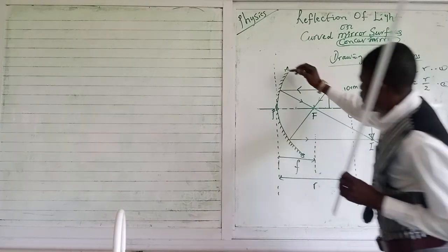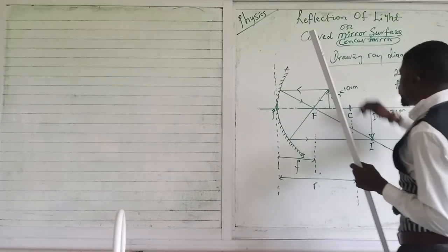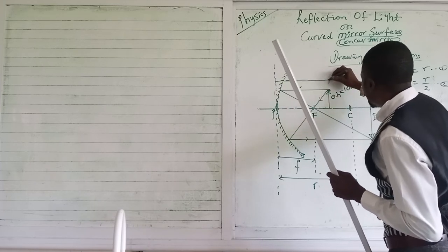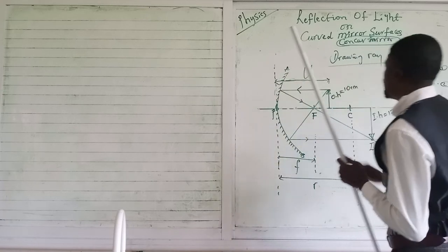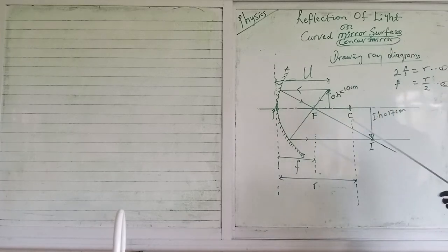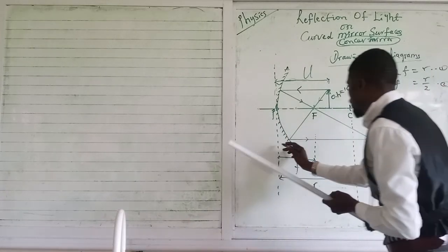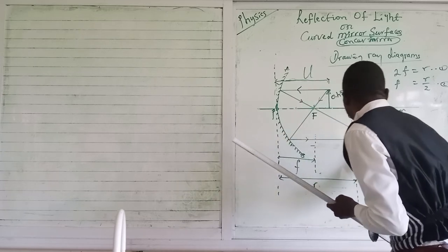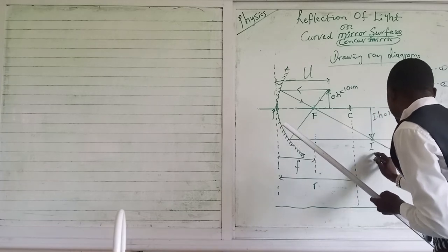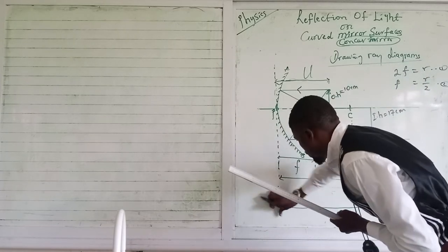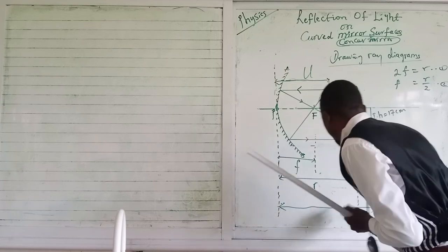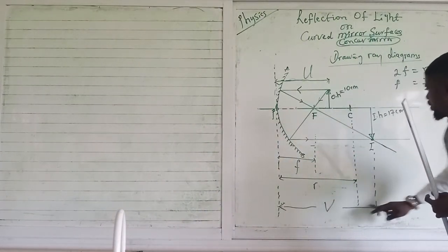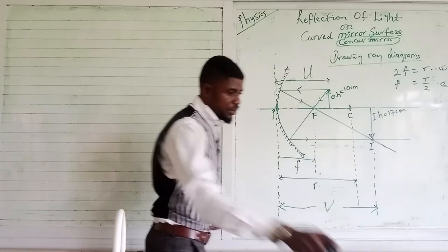The next thing is to include the rest of the geometry. The distance from where the object was placed to the pole of the mirror is called the object distance (U). The distance from where the image is formed to the pole of the mirror is called the image distance (V). From these we can generate all the mirror equations.